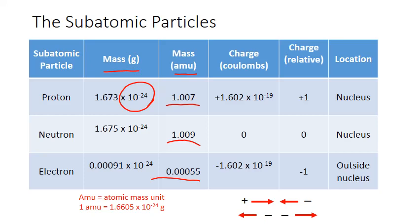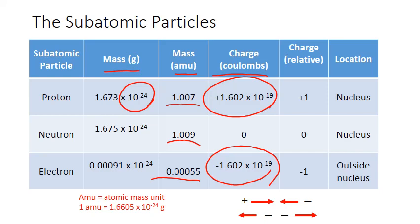You can measure the magnitude of charge using Coulombs. You can see that in Coulombs, protons are the exact opposite in charge compared to electrons: positive 1.602 times 10 to the negative 19 Coulombs versus negative 1.602 times 10 to the negative 19. These numbers are not the easiest to deal with, so we usually talk about relative charge: plus 1 for the proton, 0 or neutral for the neutron, and minus 1 for the electron.